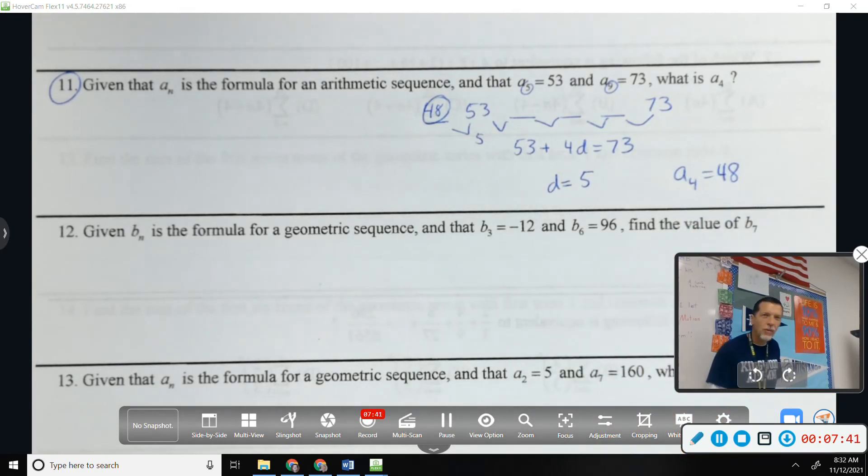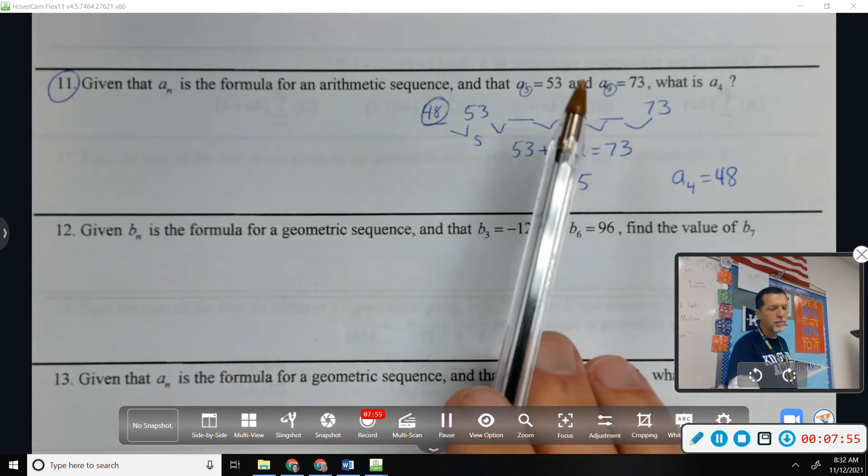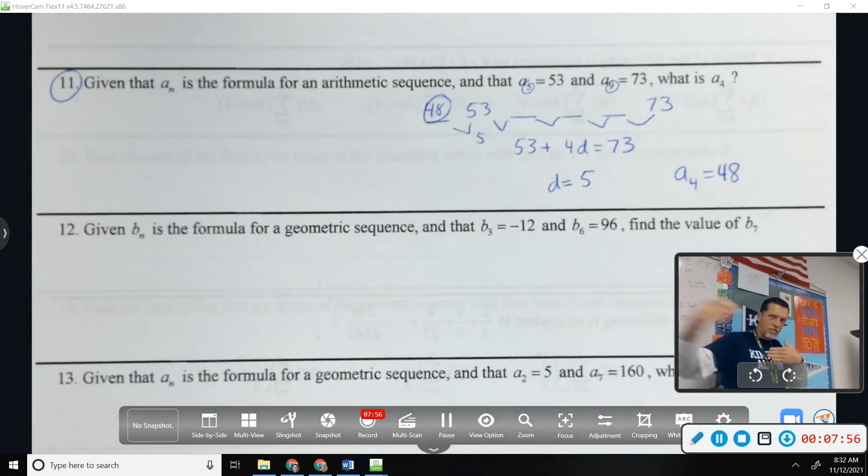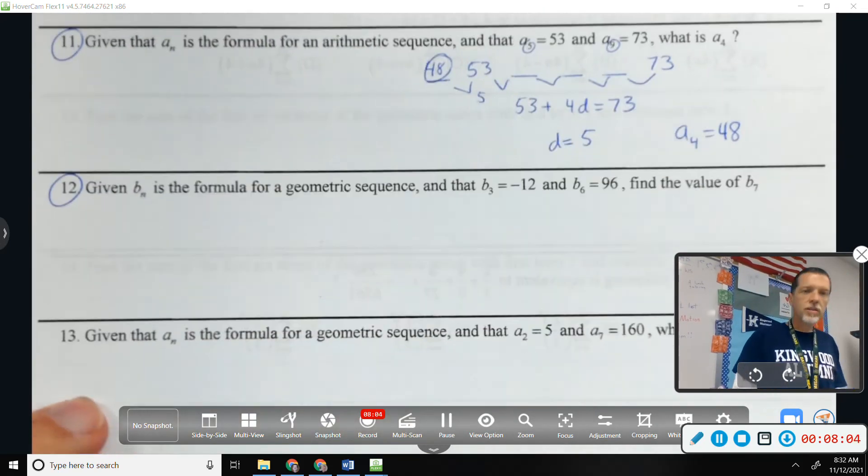It doesn't ask for a_1, so I don't really need to do that. If it had asked for something way out there like a_27, well, then I wouldn't draw all of these. But I would just figure out, well, how many steps is it from 5 to 27? Multiply by that many steps. We do 12 because it goes from negative to positive. Okay, we'll do 12. Okay, we'll move on.